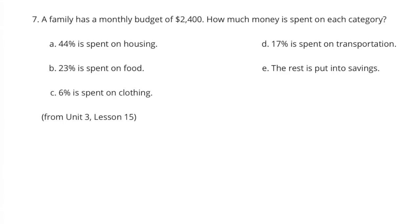Number 7. A family has a monthly budget of $2,400. How much money is spent on each category?